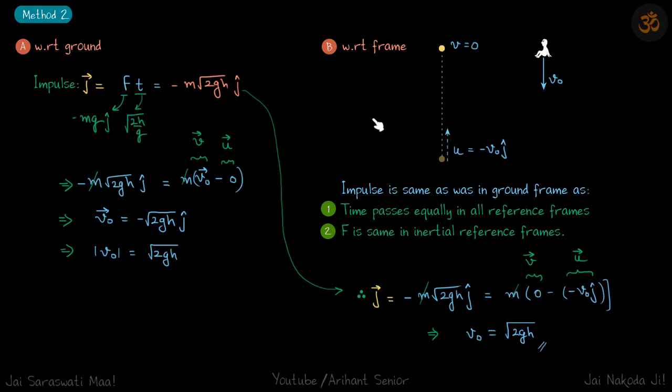Now impulse in both the frames is same because what is impulse: force into time. Time varies equally in all reference frames and force is same in inertial reference frames, which means because the reference frame itself is not accelerating there is no pseudo force on this ball, which means the only force on this ball is still the same, that which is -mg ĵ cap, and time varies equally.